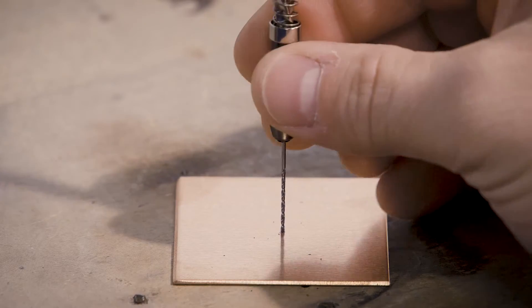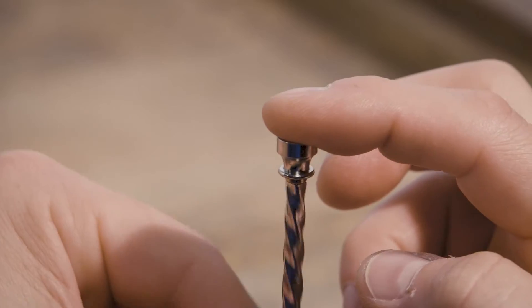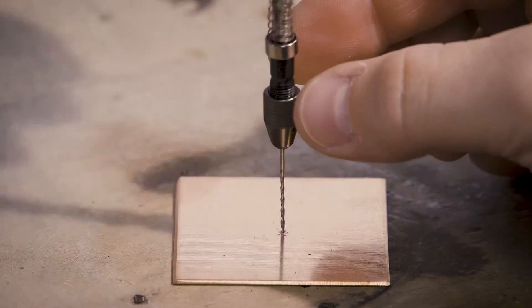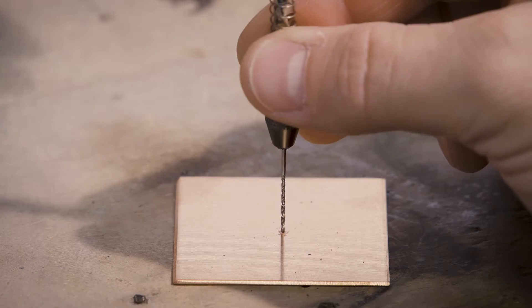Take your drill, place it in the divot, grab here and all you do is just keep going up and down until you get all the way through the metal.